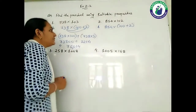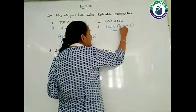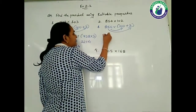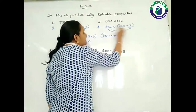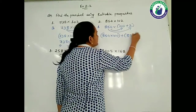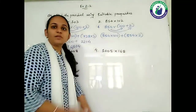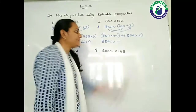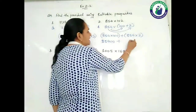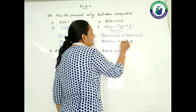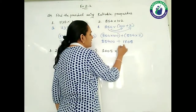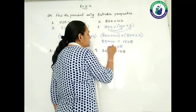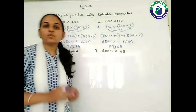So 854 multiplied by 100, then 854 multiplied by 2. So 854 multiplied by 100 gives 85,400. Now 854 multiplied by 2: 2 fours are 8, 2 fives are 10, 2 eights plus 1 is 17. So it is 1,708. Adding them: 85,400 plus 1,708. The answer is 87,108.